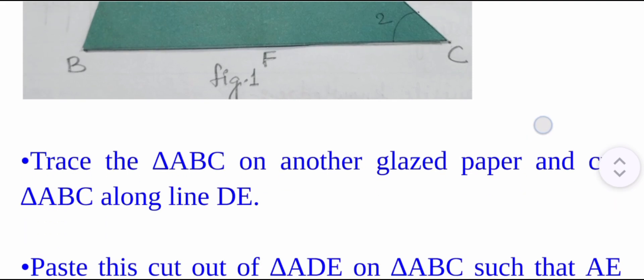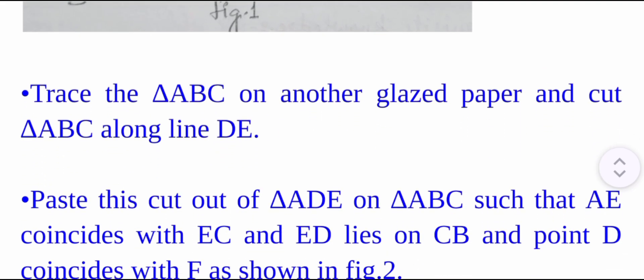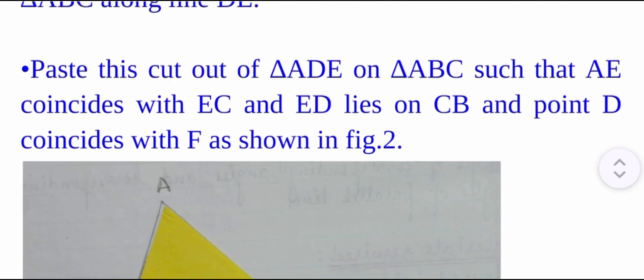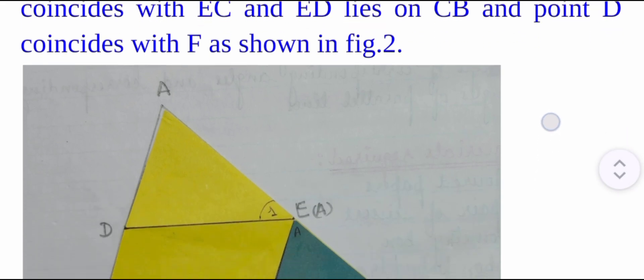Next step: trace the triangle ABC on another glazed paper and cut triangle ADE along line DE. Then paste this cutout of triangle ADE on triangle ABC such that AE coincides with EC, ED lies on CB, and point D coincides with F, as shown in figure 2.